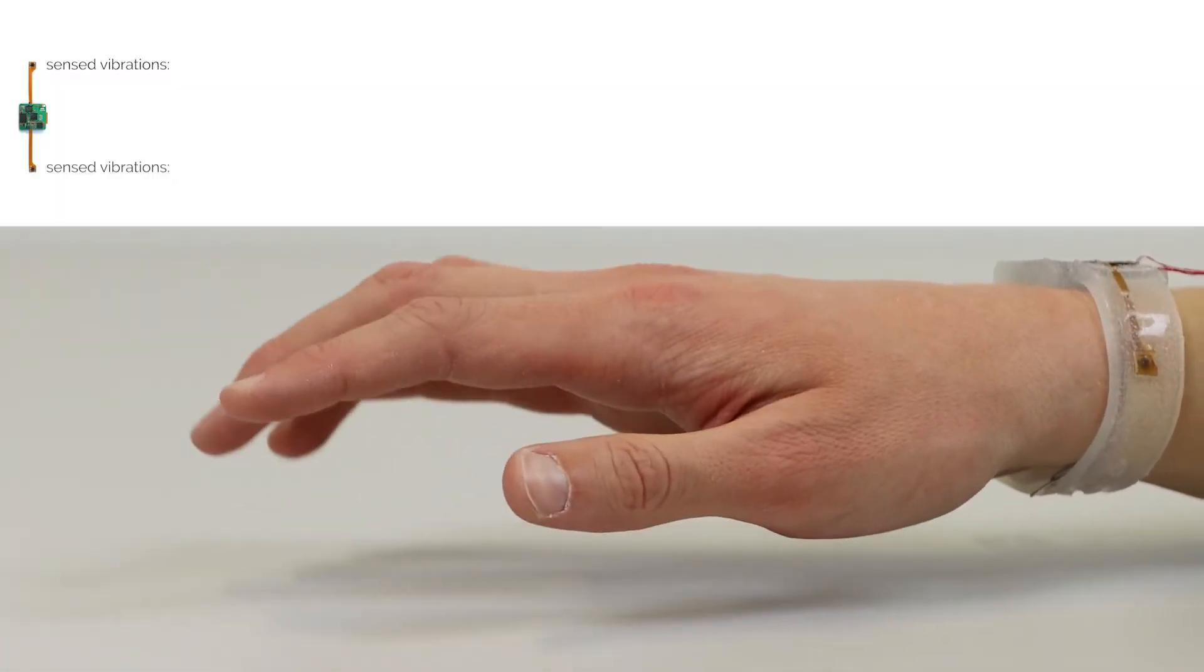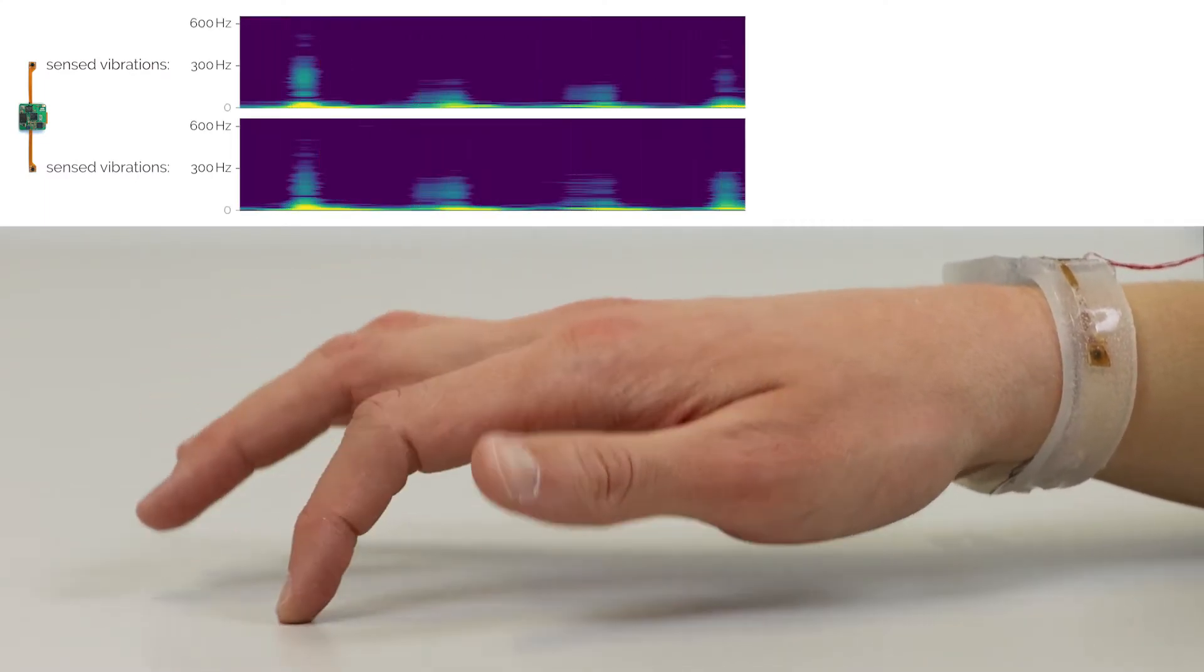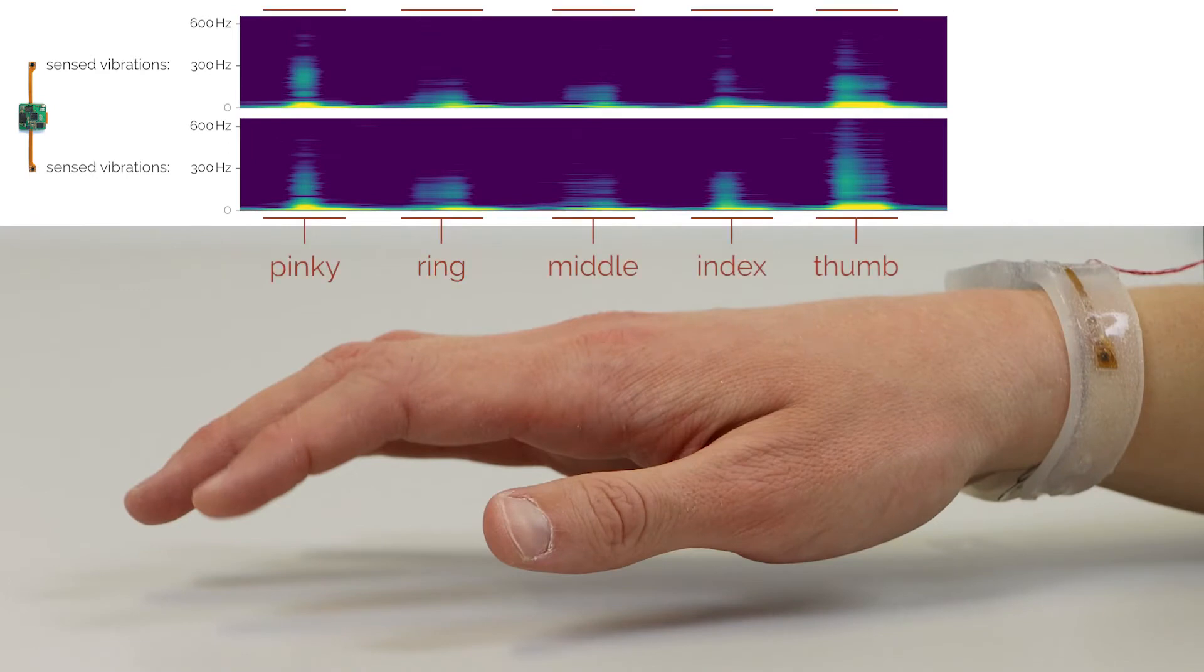TapID not only reliably detects rapid touch events on the surface, but also robustly identifies the finger used for touch input through a machine learning classifier.